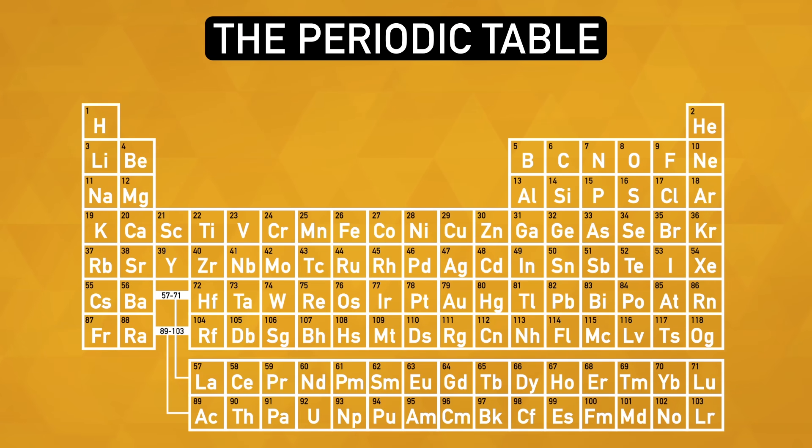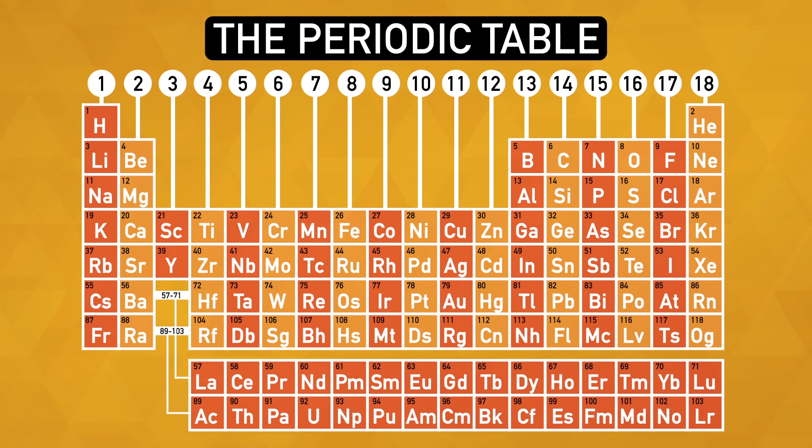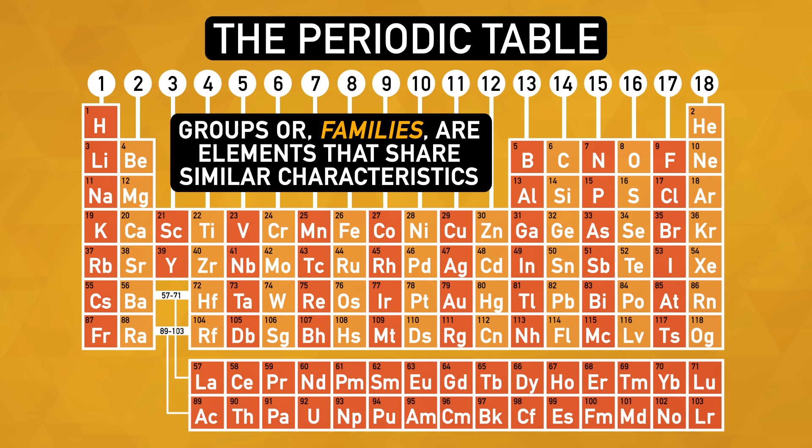The periodic table is a super organized collection containing information about each element placed into rows and columns. There are 18 numbered columns on the table that we call groups. These groups are sometimes referred to as families, and like real families, elements in a specific group share some characteristics.